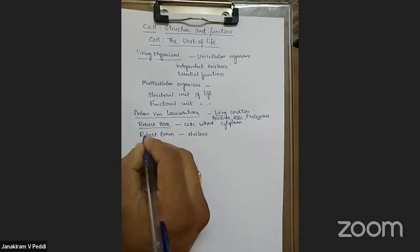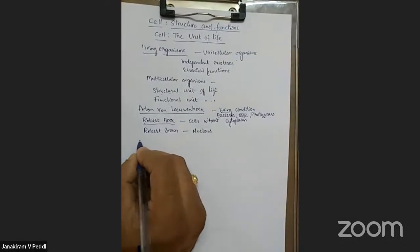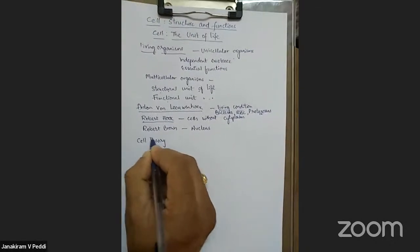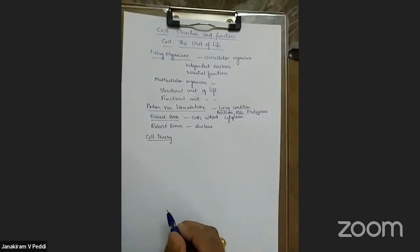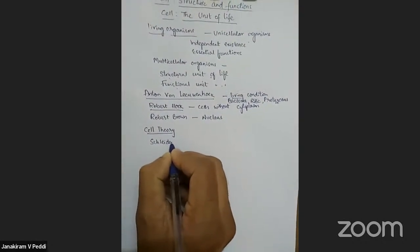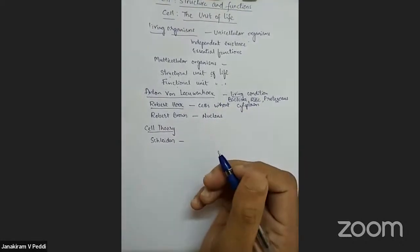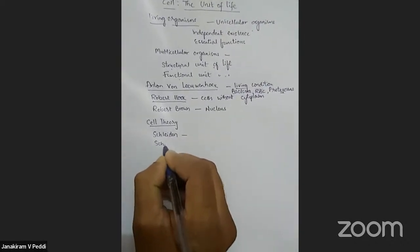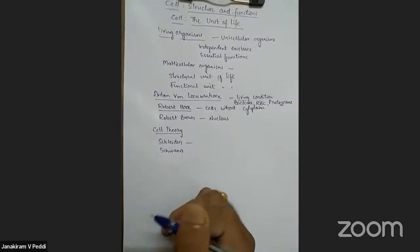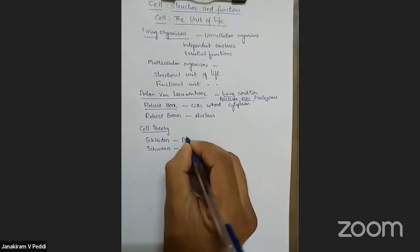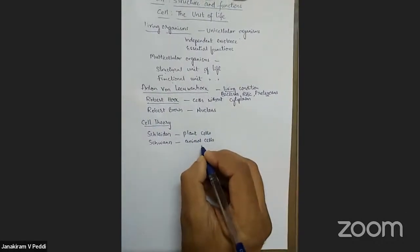Based on cell functions, a concept called Cell Theory was proposed by a botanist and a zoologist. Matthias Schleiden, a botanist, studied different types of cells and tissues in plants. Theodor Schwann, a British zoologist, studied animal cells. Schleiden studied plant cells and Schwann studied animal cells.